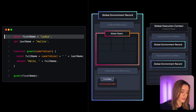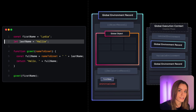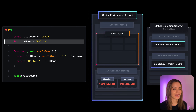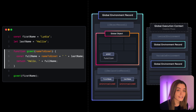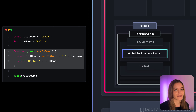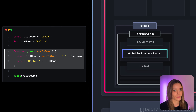On line two, we have lastName declared with let. It similarly uses the lexical environment pointing to the global environment record's declarative record, and is also uninitialized until the execution phase. Then we have the function greet — function declarations are managed by the object record. In contrast to the previous variables, functions are initialized during the creation phase, so a new function object is created for greet.